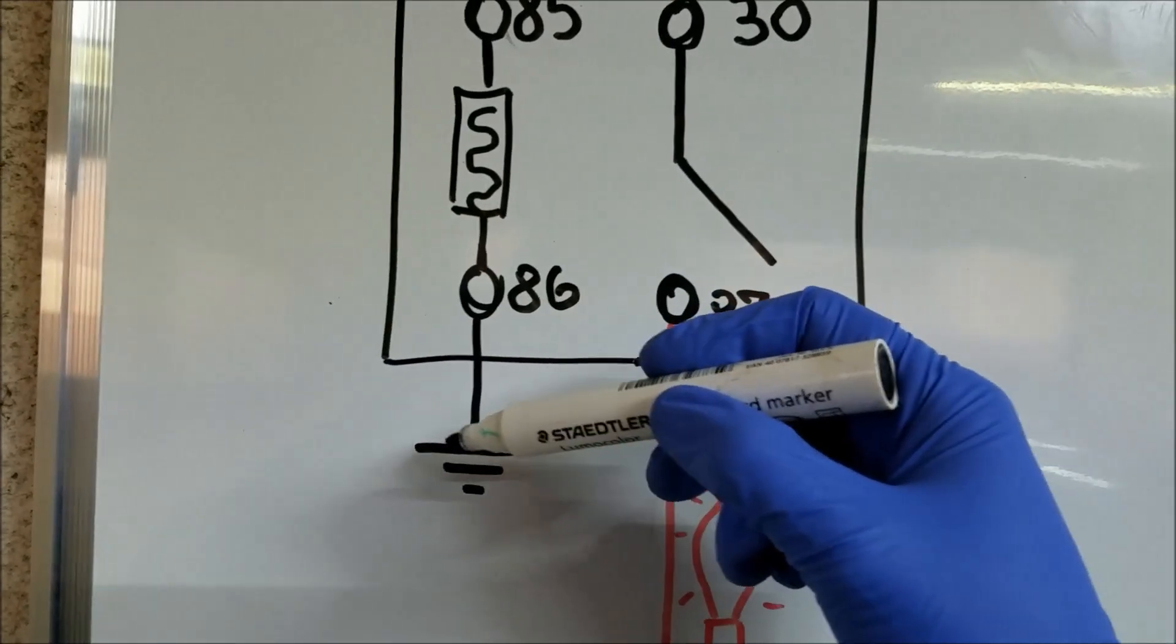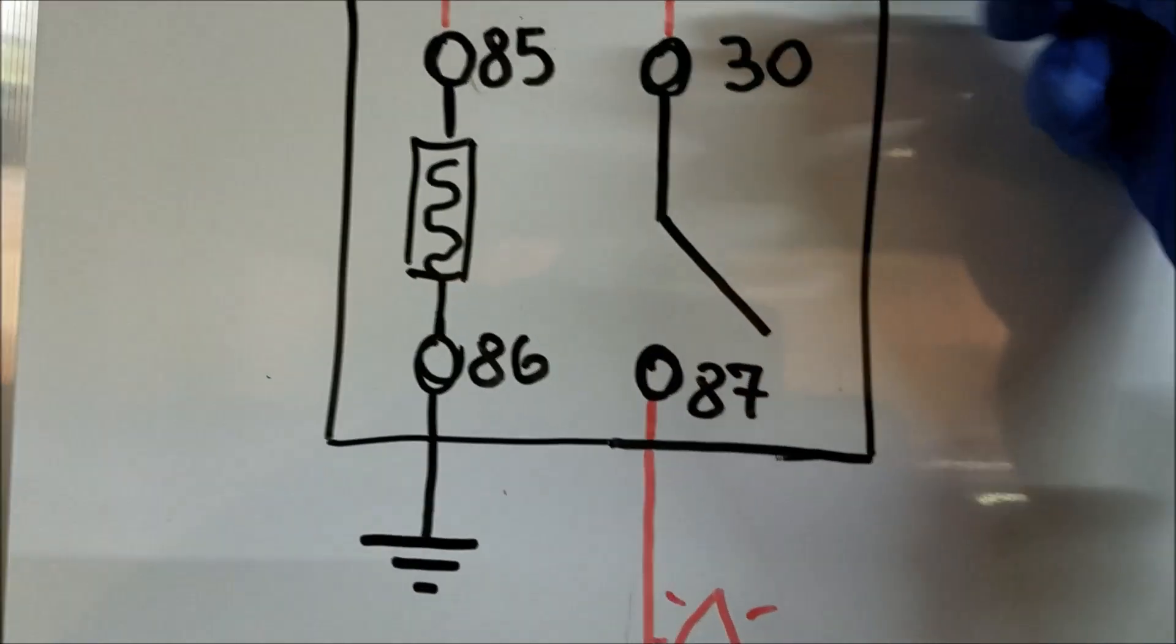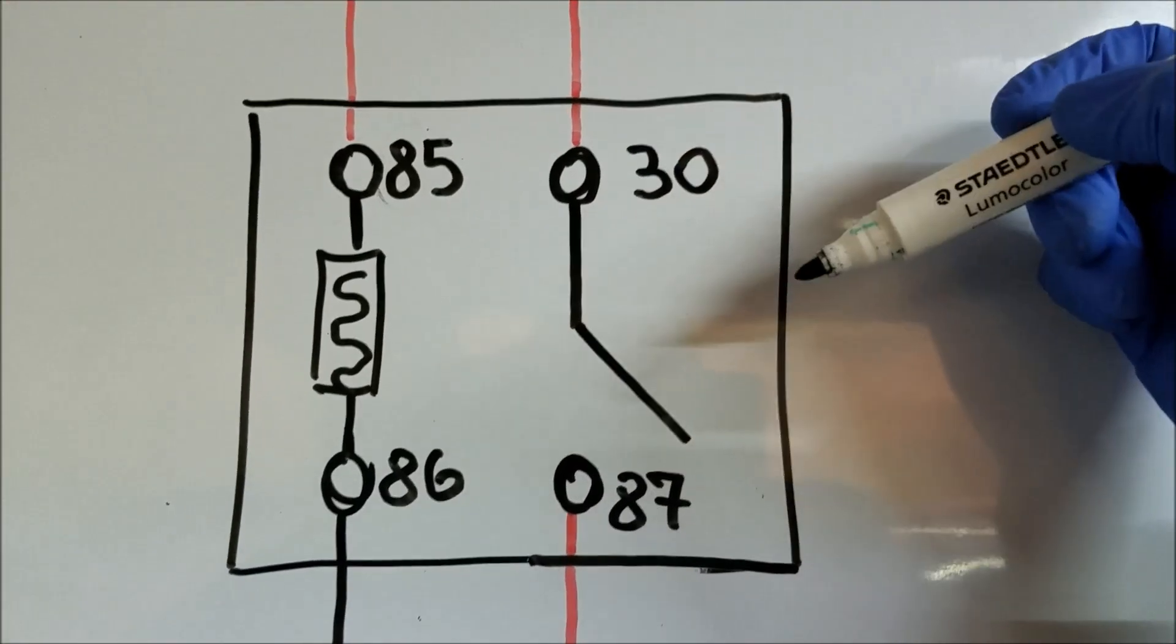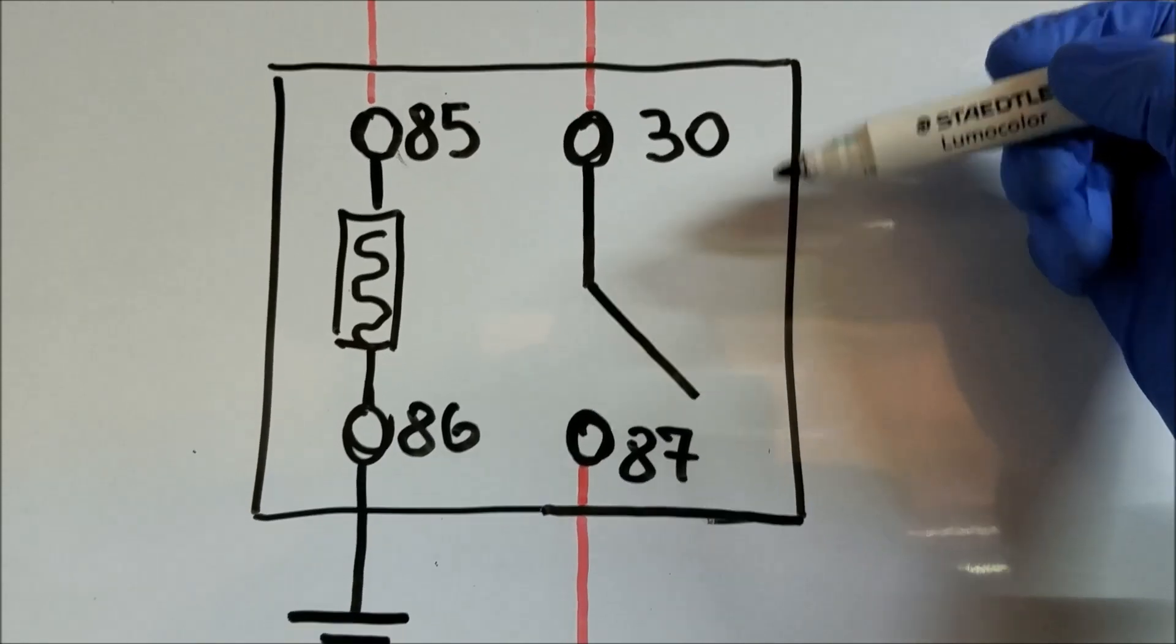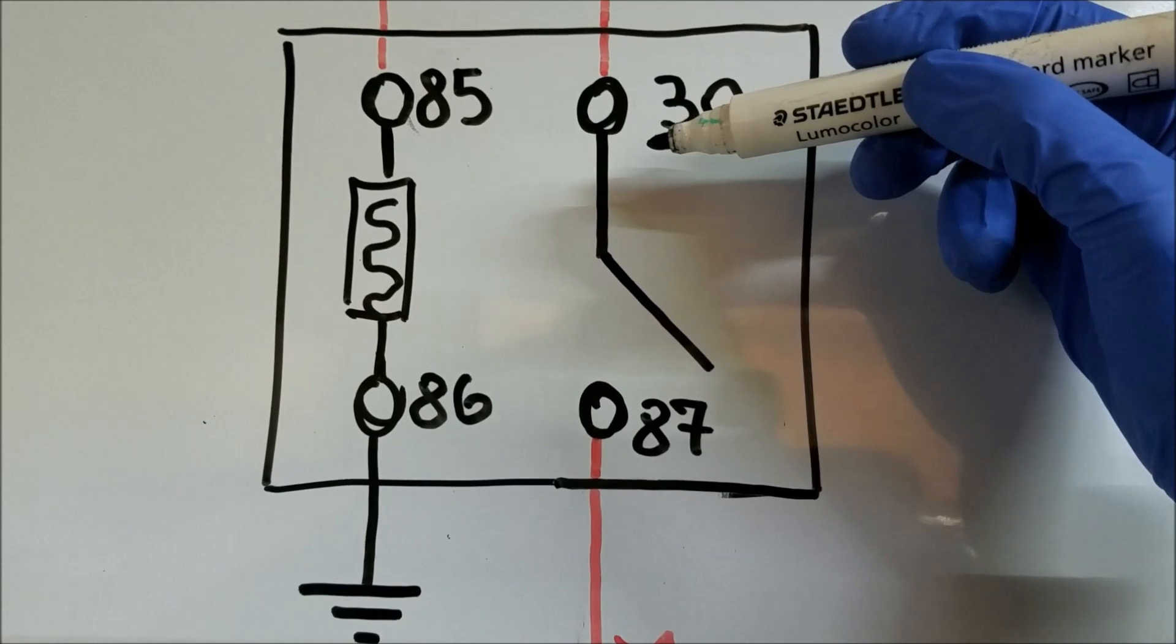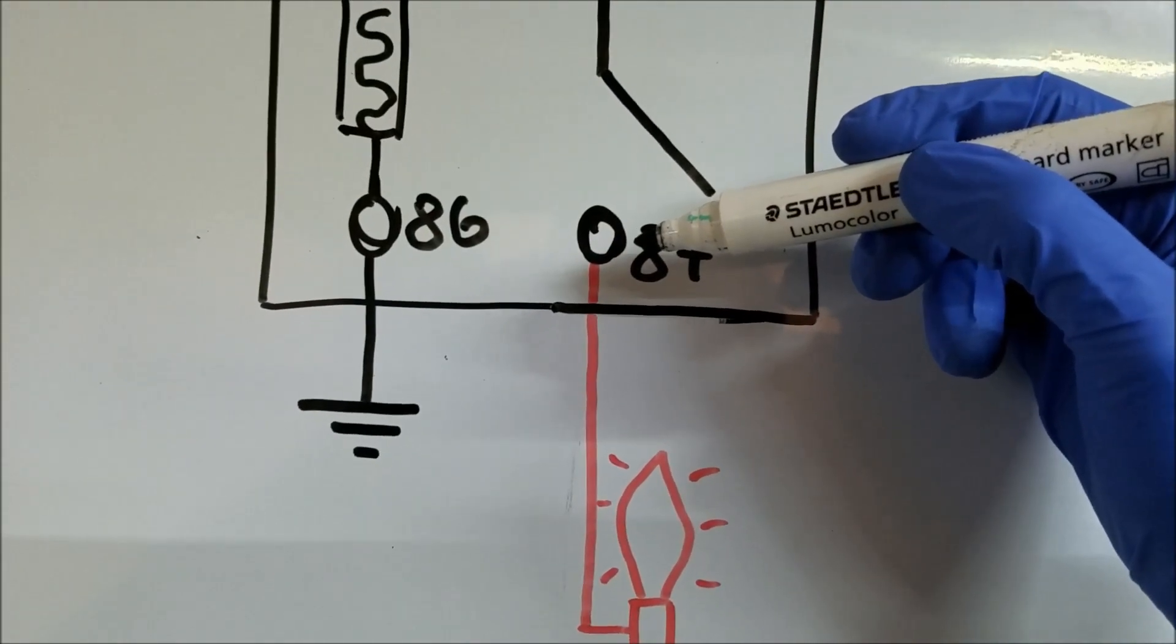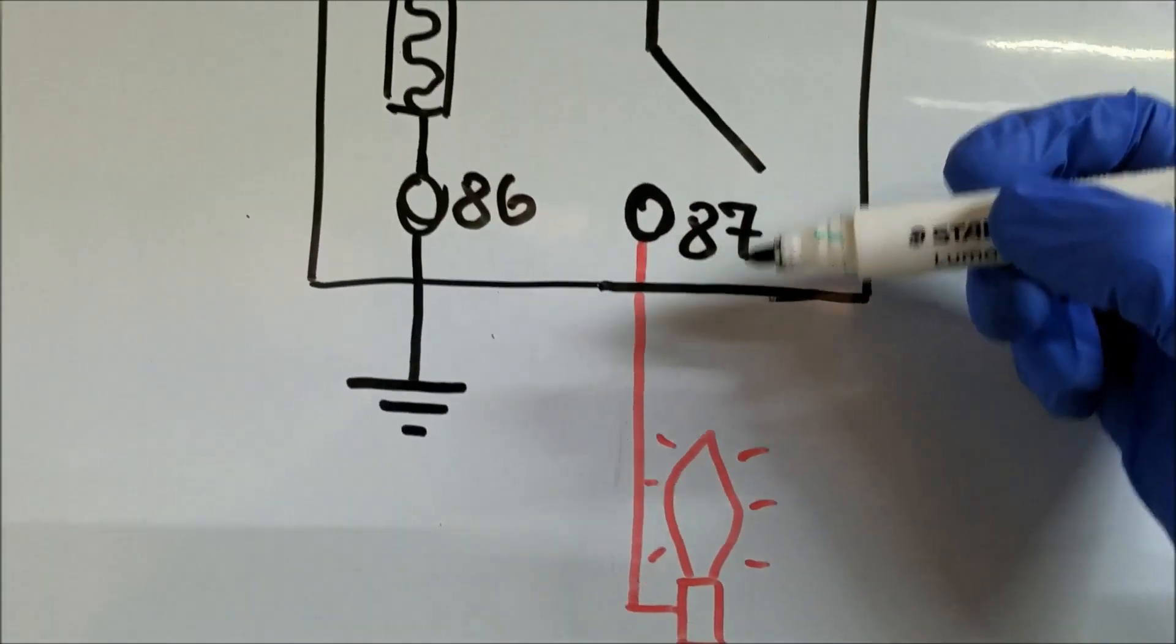Pin number 30 is going to be our main connection, while pin number 87 is going to be the pin that basically closes the loop when the electromagnet is activated. So we got the electromagnet which closes the loop and sends the electricity to our components.